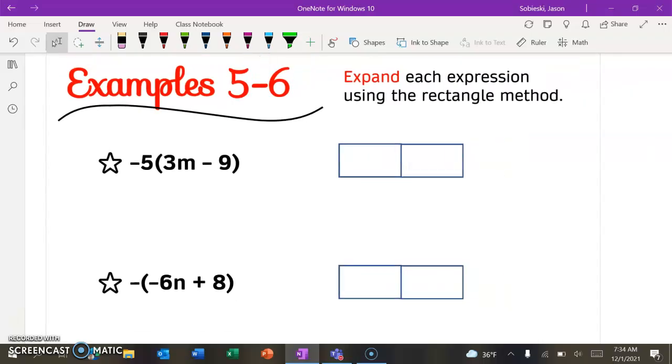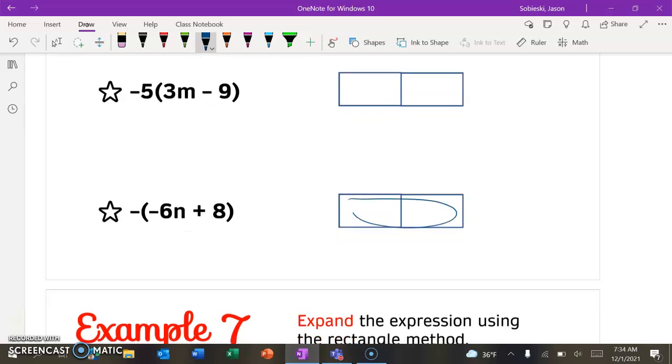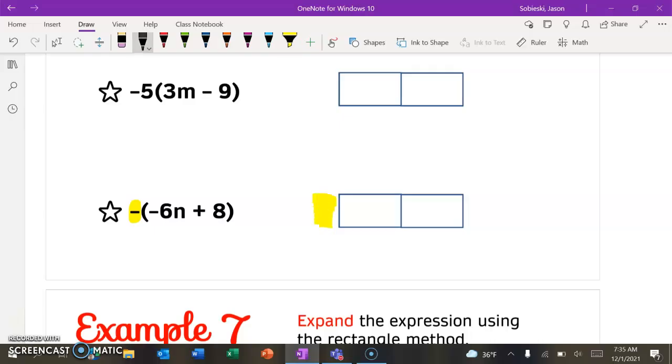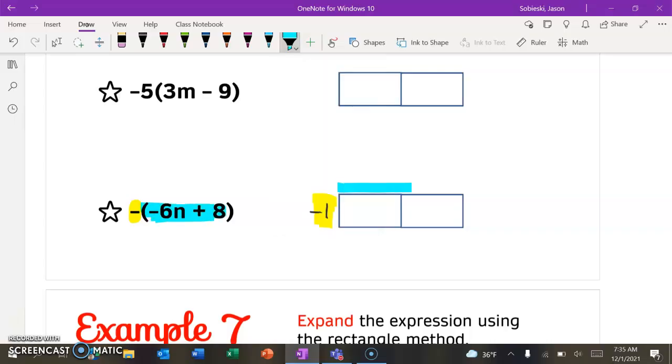All right. If you scroll to examples 5 and 6, we are going to leave the first one, example 5, to you. But we are going to look at example 6 together. They want us to expand. So that means we're solving for what's inside the rectangle. So let's see if we know what we can put on the outside. Yesterday, we said the thing that comes out front is what's going to go on the left side of the rectangle. If it just is a negative sign, that's technically a negative 1. So we can put that there.